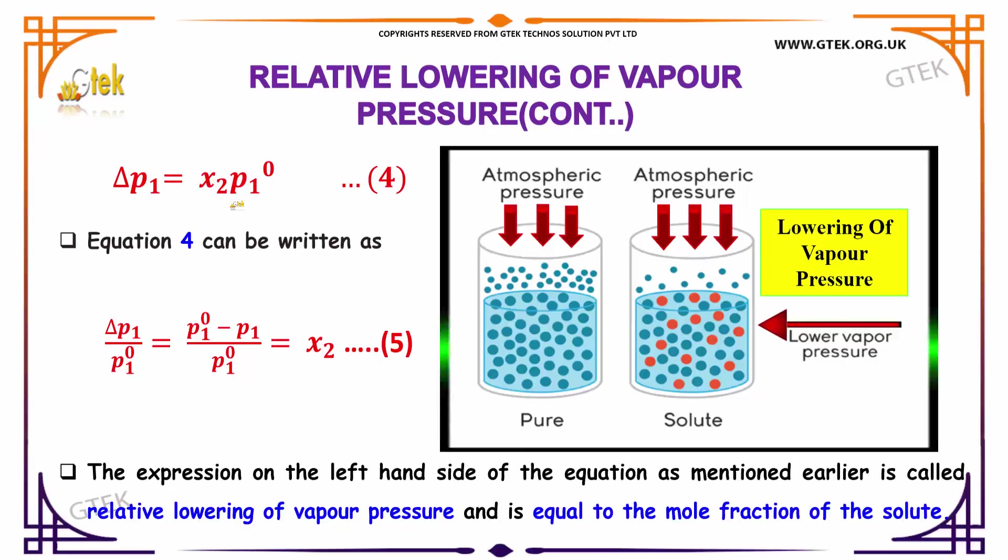Delta P1 is equal to x2 into P10. Equation 4 can be rewritten as delta P1 divided by P10 is equal to P10 minus P1 divided by P10, which is equal to x2.